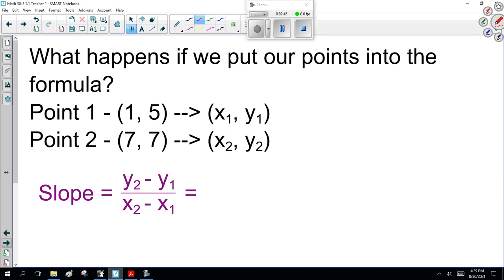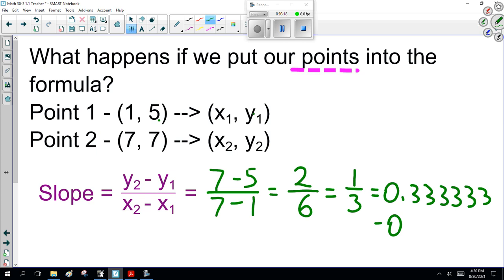What happens if we put our points into the formula? Note here, y2 is 7, y1 is 5, x2 is 7, x1 is 1. So 7 minus 5 is 2, 7 minus 1 is 6. We're getting 2 over 6, which is 1/3, or 0.333 repeating.